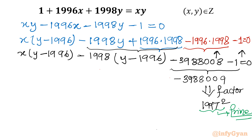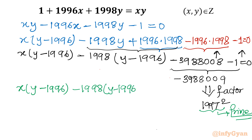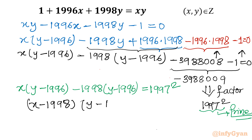So let me write the equation once again. We have x minus 1998 in one bracket times y minus 1996 in the other bracket, equal to 1997 squared.